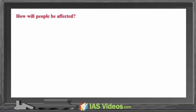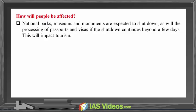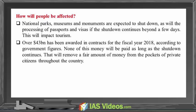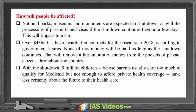How will people be affected? National parks, museums and monuments are expected to shut down, as will the processing of passports and visas if the shutdown continues beyond a few days — this will impact tourism. Over $43 billion has been awarded in contracts for fiscal year 2018; none of this money will be paid as long as the shutdown continues, removing a fair amount of money from the pockets of private citizens. With the shutdown, 9 million children whose parents usually earn too much to qualify for Medicaid but not enough to afford private health coverage have less certainty about the future of their healthcare.